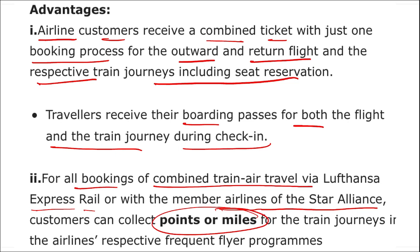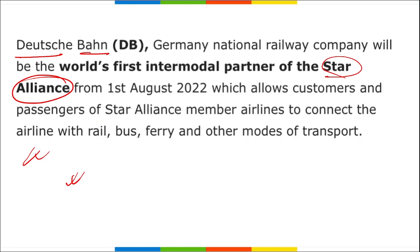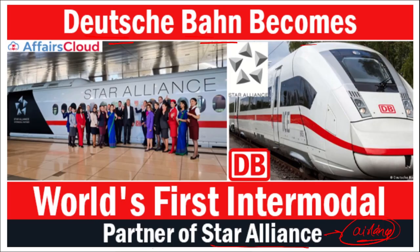Customers can also collect miles or points for train journeys in the airline's frequent flyer program. In summary, Deutsche Bahn has become the world's first intermodal partner of Star Alliance to connect airlines with rail, bus, ferry, and other transport modes.